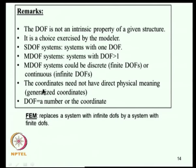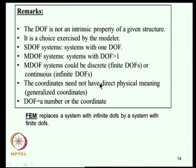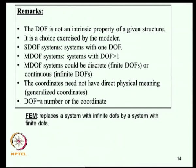The coordinates used to define DOF need not have direct physical meaning. For example, the coefficients A₁, A₂, ..., Aₙ in a series representation of beam displacement help define W but individual terms lack direct physical interpretation - these are called generalized coordinates. The term 'degree of freedom' has dual meaning: it is both the count of independent coordinates and the coordinates themselves used to specify the system configuration. Finite element method is an approximate method replacing infinite-DOF systems with finite-DOF systems.